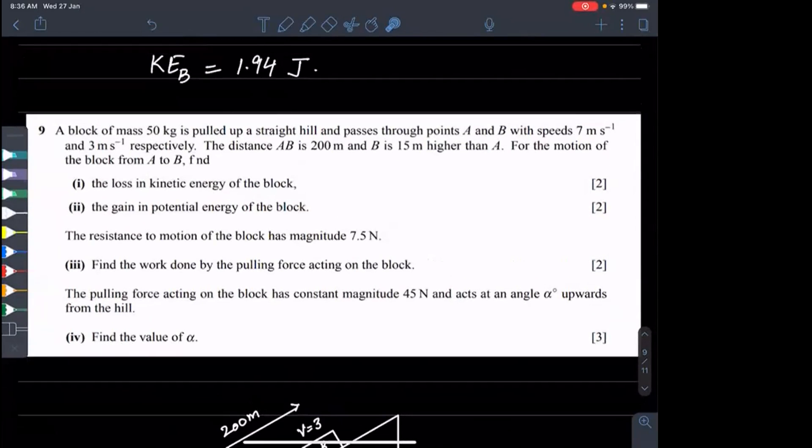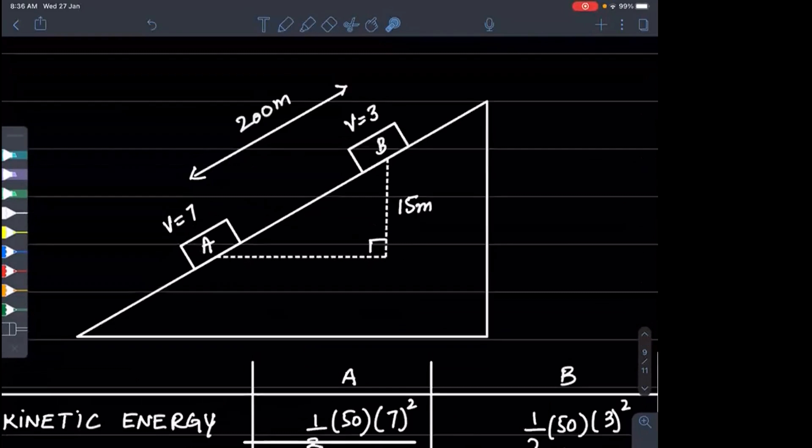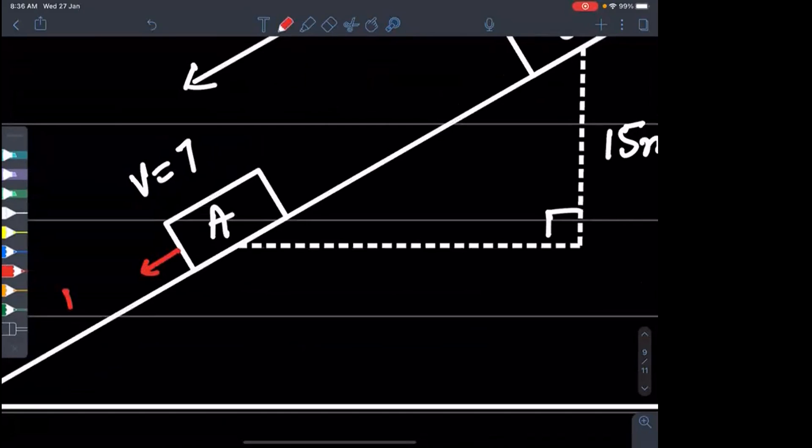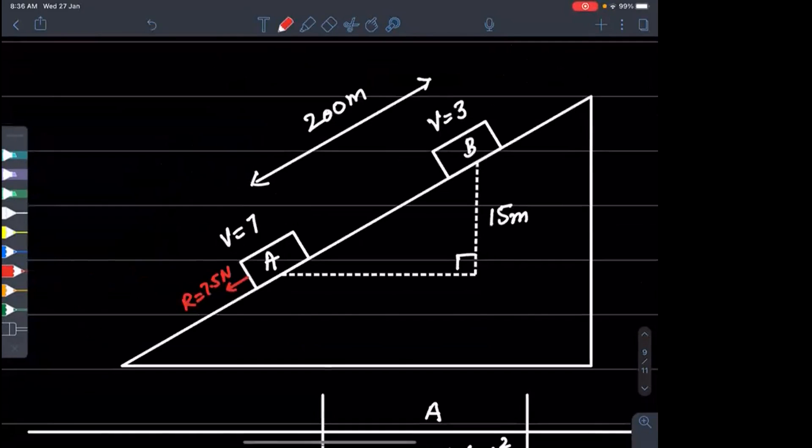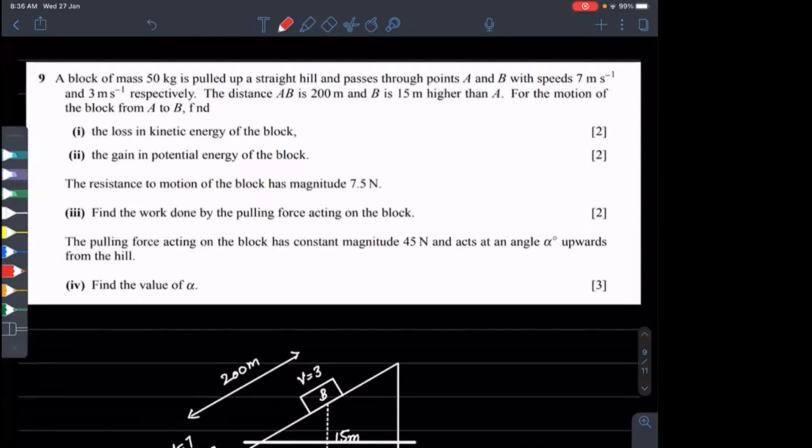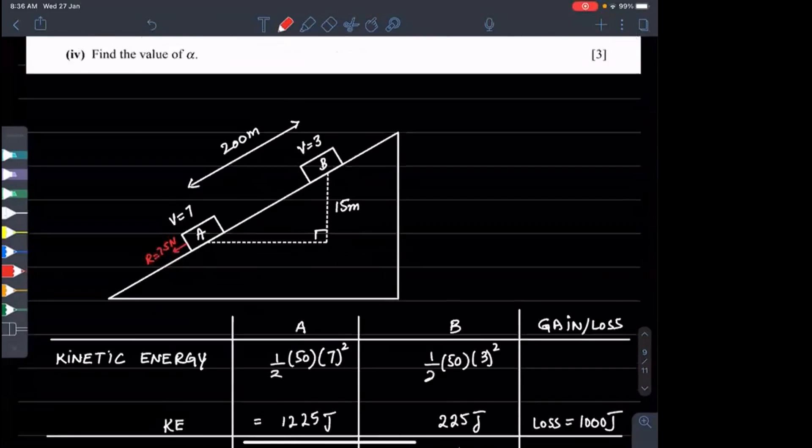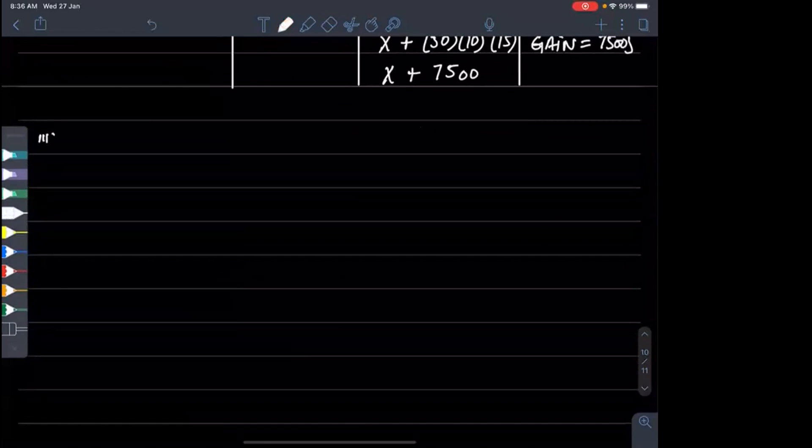Loss in kinetic energy and gain in potential energy are given. The resistance to the motion of the block is 7.5 Newtons. Find the work done by pulling force. What will we do? Before and after. Before was A, after was B. Potential energy, kinetic energy, and work done by the driving force. After: potential energy, kinetic energy, and work done against frictional resistance.